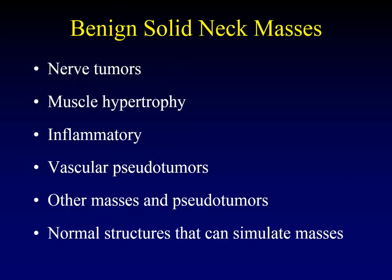This is just a list of the tumors that we will be discussing over the course of this lecture. We'll start with tumors arising from nerves, then move on to abnormalities of muscle. We'll talk about inflammatory pseudotumors, vascular pseudotumors, and other masses and pseudotumors. Finally, we'll round it out with a discussion of normal structures that can simulate a mass in the neck.